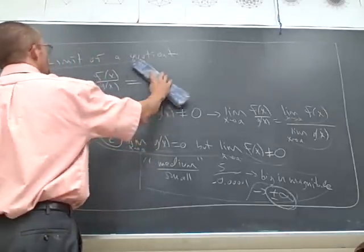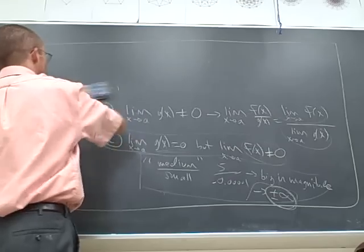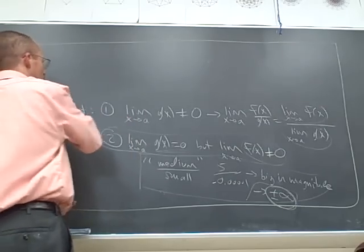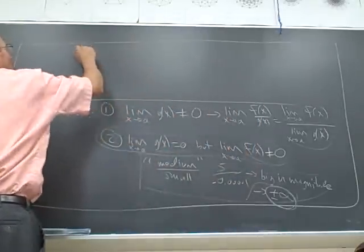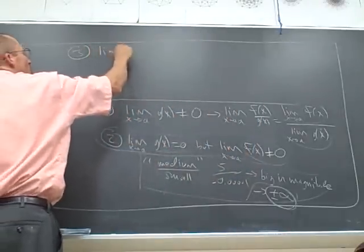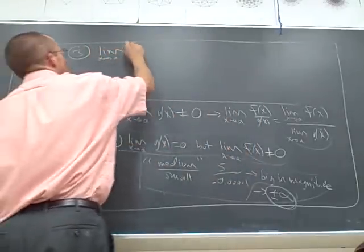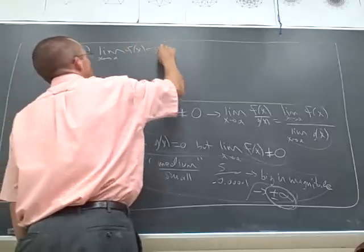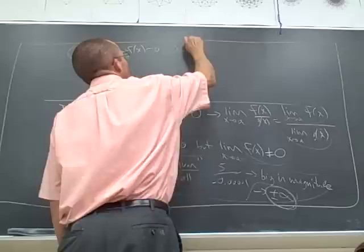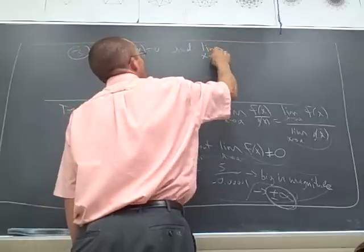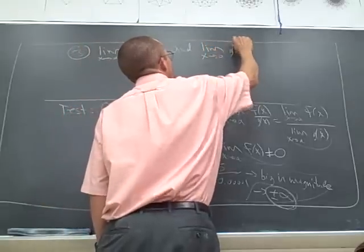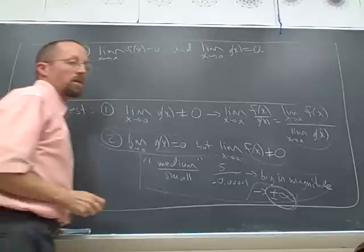And I'm already out of room. Well, let's go up to here. Case 3 is where the top and the bottom both go to zero.